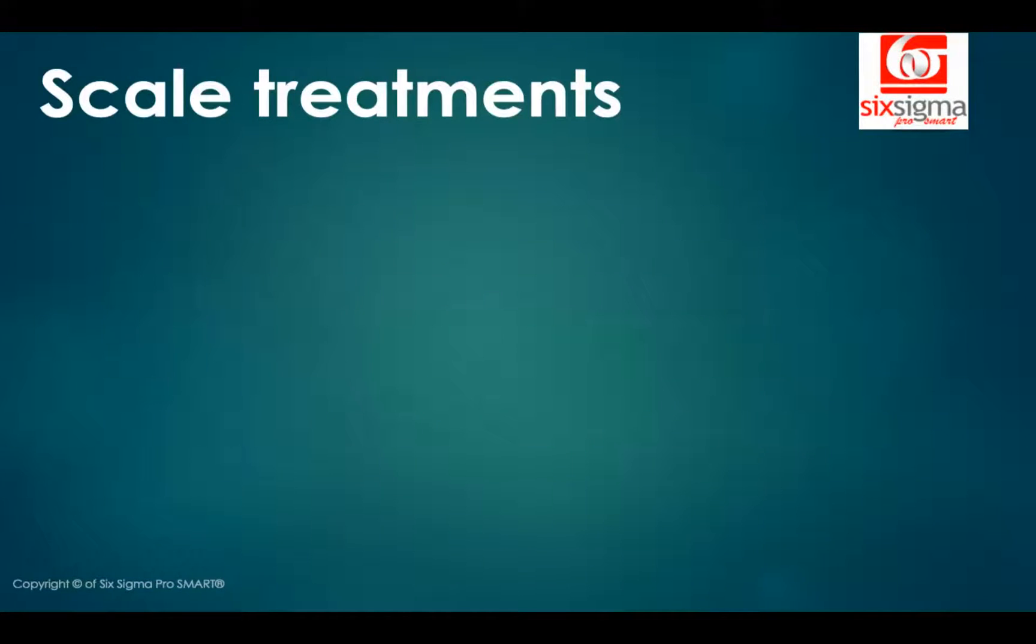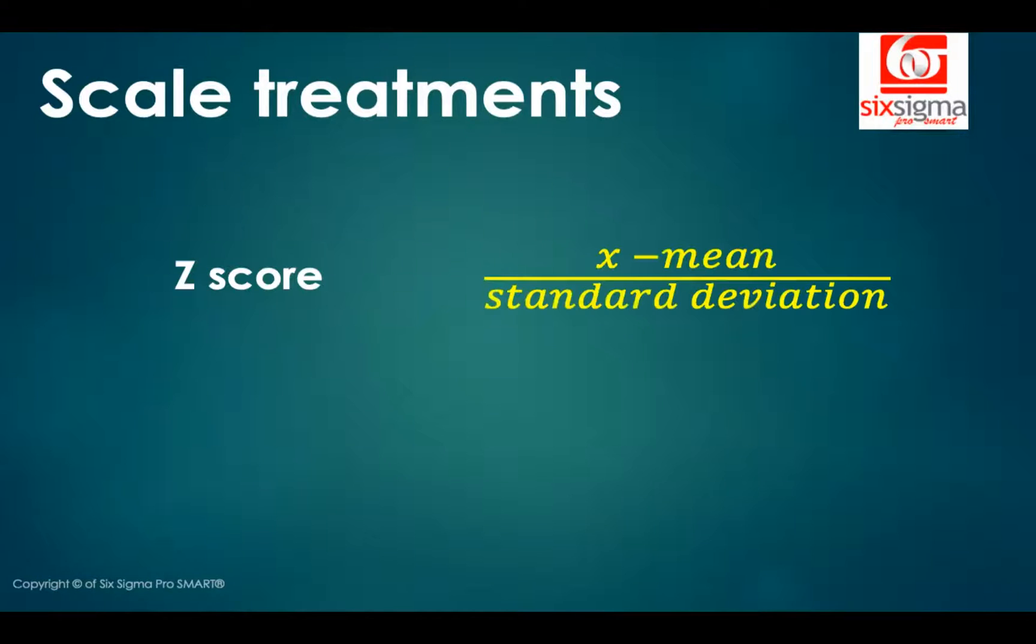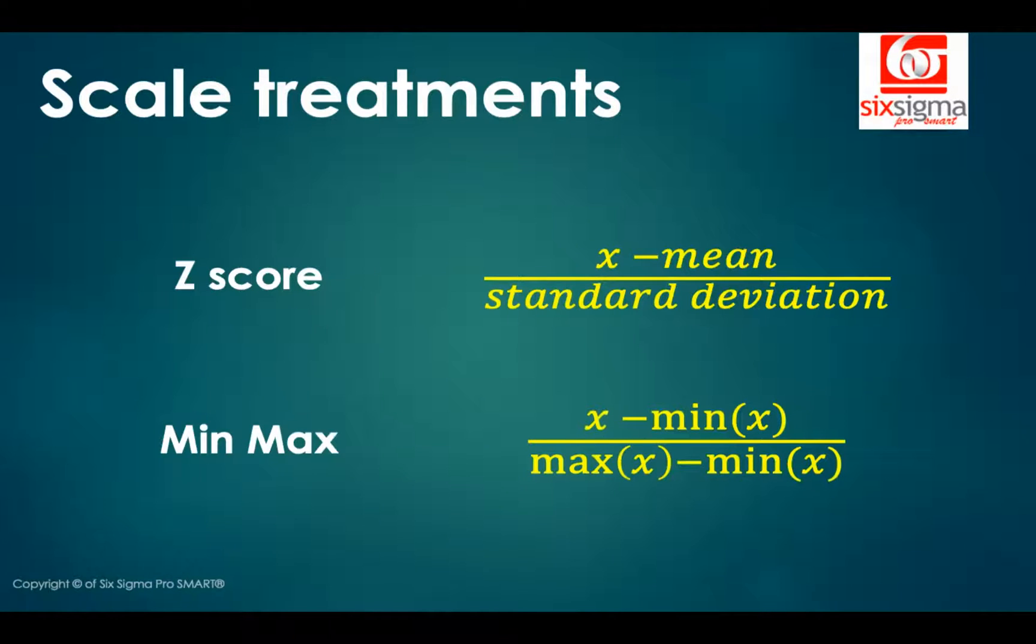With this background, let's understand how do we go about scaling our data. There are two types of popular treatments when it comes to scaling. First is a z-score treatment. You take the value, from each value subtract the column mean and divide it by the standard deviation. And the other is min-max scaling, where you take a value and from the value subtract the minimum value of the column and divide it by the range of the column, that is the maximum value and the minimum value.